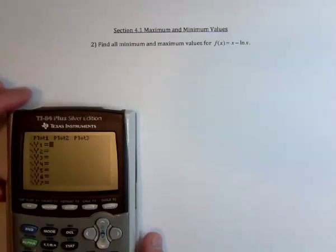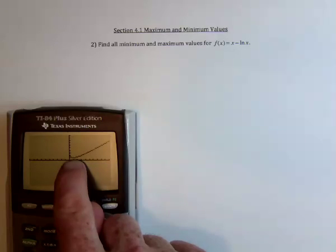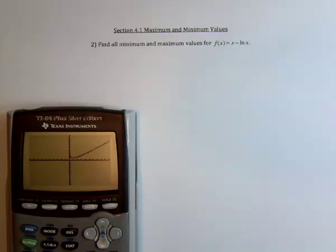Once again, I'm going to begin with taking a look at the graph and finding out how many minimums and maximums I might be looking for. And this sort of looks like a Nike swoosh. Looks like there's one minimum value there at about x equals 1.